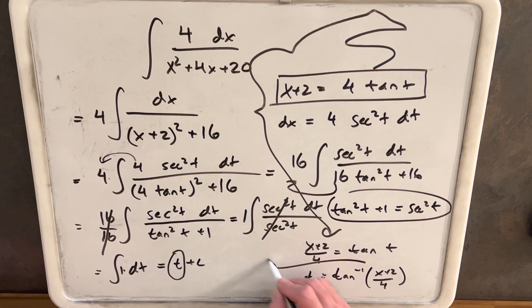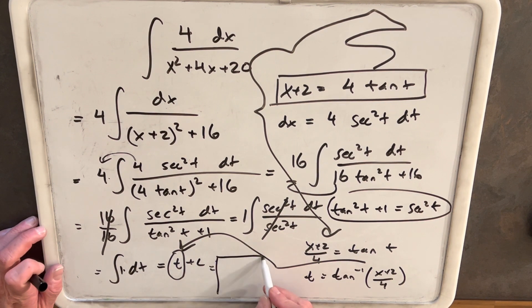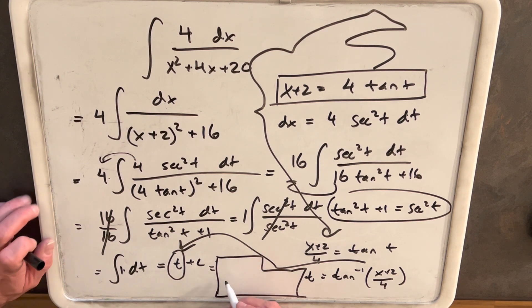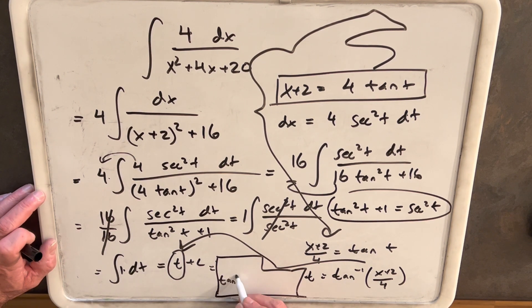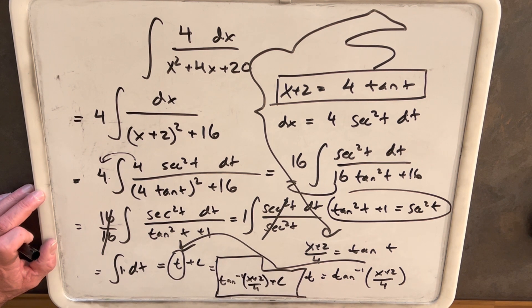Substitute that back in for t. And how convenient is it that I have exactly the right amount of room for the answer right here. We're going to have tan inverse, x plus 2 over 4 plus c. And we're done.